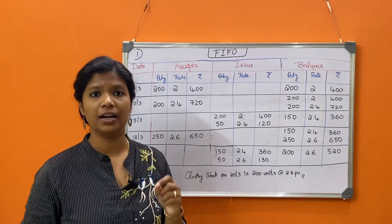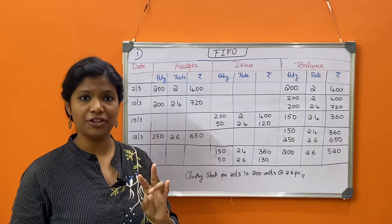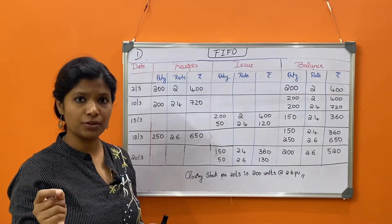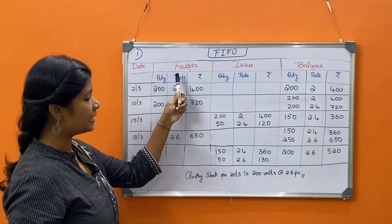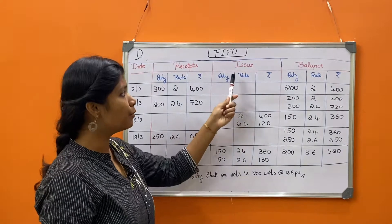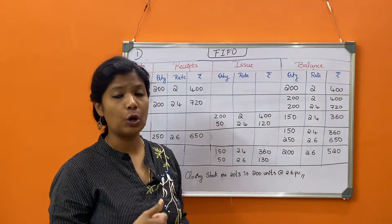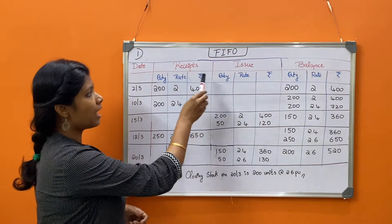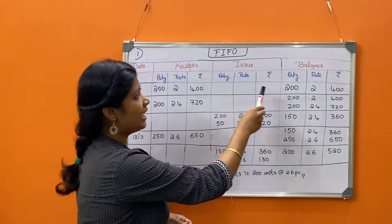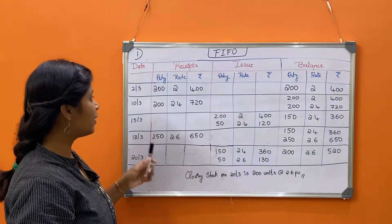Today we'll be dealing with the first method — FIFO, first in first out. The format for all four methods — FIFO, LIFO, weighted average, simple average — will remain the same. At the top you write which method you're solving under, and then you have columns for date, receipts, issue, and balance. Under receipts, issue, and balance, you'll have three sub-columns each: quantity, rate, and amount.